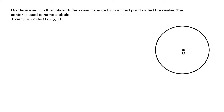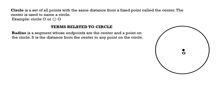Let us now proceed to our main topic: terms related to a circle. Let's begin with radius. Radius is a segment whose endpoints are the center and a point on the circle. It is the distance from the center to any point on the circle.